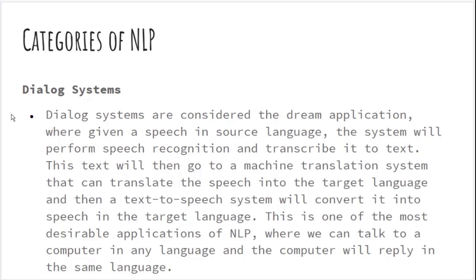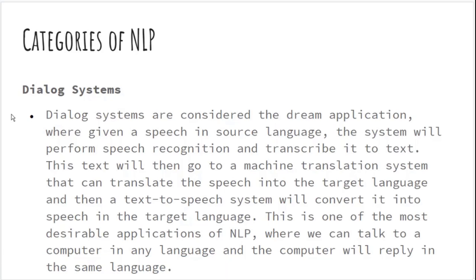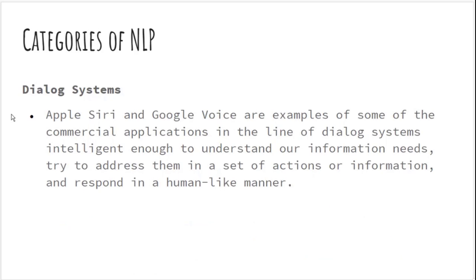Dialogue systems are one of the dream applications of NLP, in which you have a fluent dialogue with a computer. The text goes through a machine translation system that translates speech to a target language if you are conversing in different languages, and then the machine answers and holds a conversation with you. Examples of dialogue systems are Apple Siri and Google Assistant.